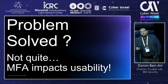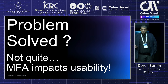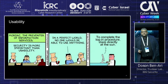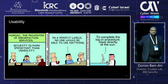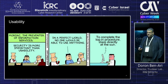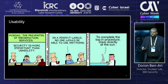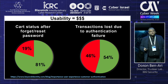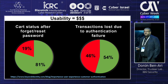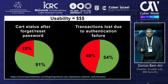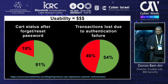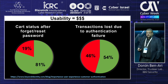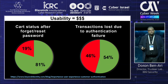Another issue with MFA is that it impacts usability. There's a famous Dilbert cartoon showing an IT guy wishing that to complete login you need to stare directly at the sun — that's the 'protect everything' mentality. But usability means money. Looking at e-commerce: shopping cart abandonment after a forgotten or reset password is around 20% lost transactions; abandonment due to authentication failure is almost 50% lost. Usability is a big deal.